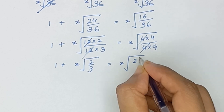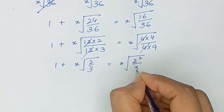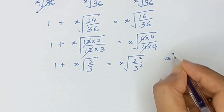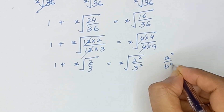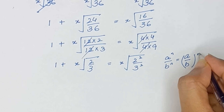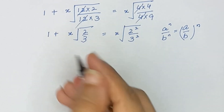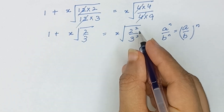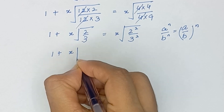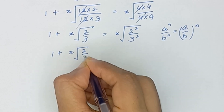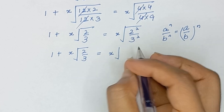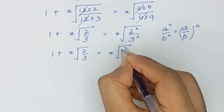4 can be written as 2 squared, and 9 can be written as 3 squared. We know that a^n divided by b^n is equal to (a divided by b) whole to the power n. So it will become (2 divided by 3) whole squared. Thus: 1 plus x-root of (2/3) is equal to x-root of (2/3) squared.